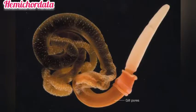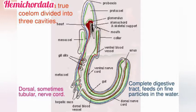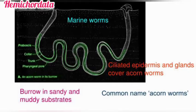Hemichordata is also closely related to Echinodermata. They contain both vertebrate and chordate characters. The phylum Hemichordata consists of a small group of worm-like animals — soft marine animals, mostly living in tube-like structures. They are commonly called acorn worms or tongue worms.